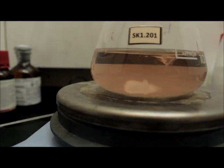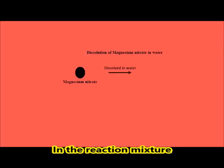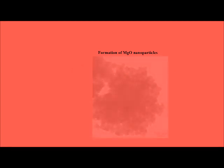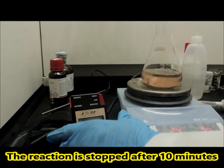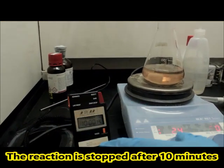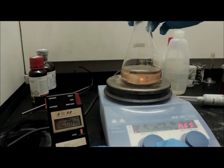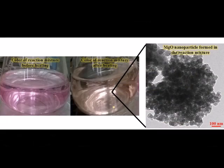During the reaction process, magnesium nitrate dissolves in water to its ionic state. Phytochemicals degrade with heat to give oxygen, which binds with magnesium to form magnesium oxide nanoparticles. The reaction is stopped after 10 minutes, and a color change after the reaction indicates the formation of magnesium oxide nanoparticles.